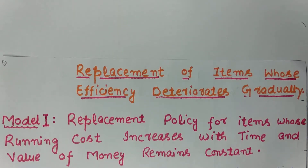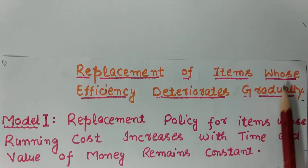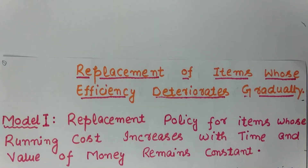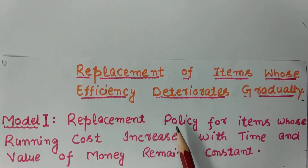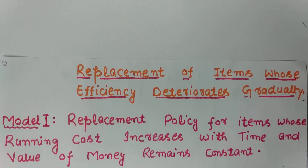Hello friends, welcome to my YouTube channel. Today I am going to discuss the first model of replacement of items whose efficiency deteriorates gradually — meaning whose efficiency decreases as the life of an item increases. Model one is the replacement policy for items whose running cost increases with time and value of money remains constant. Running cost, maintenance cost, and operating cost are all included.